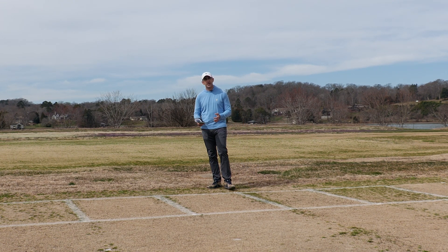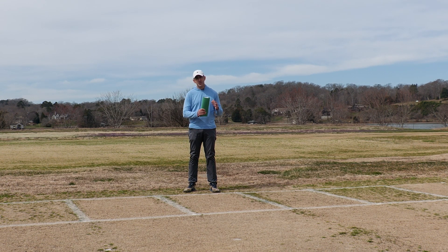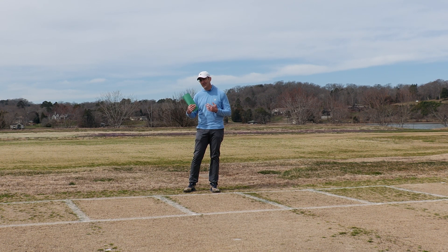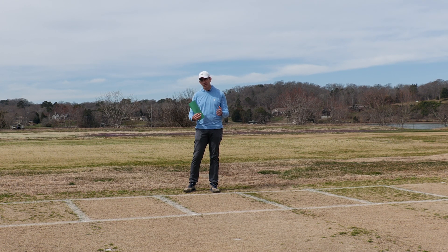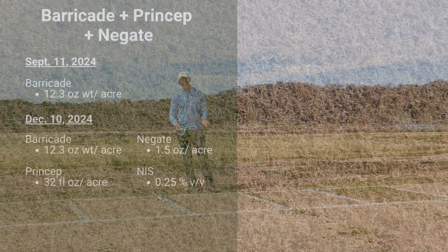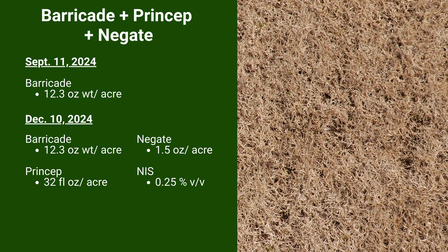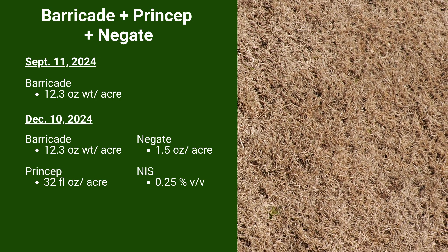The next plot builds on that same concept. One thing UT Extension likes to promote for Tennessee is making an application every 90 days — or maybe even sooner in some geographies. If you're south of Tennessee in a different part of the Southeast, based on your weather patterns you might need applications on 60-day intervals or even shorter. For Knoxville, a 90-day interval works best. Here we have an application of Barricade on September 11th, and we come back 90 days later in December with a mixture of Barricade, Princep, and Negate — three modes of action for that second treatment.